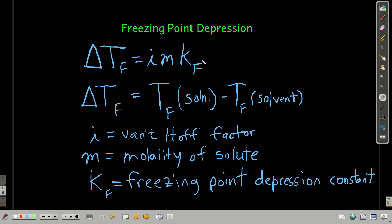Freezing point depression works like boiling point elevation except that the freezing point of a solution is always lower than that of the pure solvent when you add a non-volatile solute. Here, delta Tf equals the freezing point of the solution minus the freezing point of the pure solvent — this will be a negative number. When using it in the equation, just make it positive; it works out better. It uses the same Van't Hoff factor, same molality, and a freezing point depression constant that depends only on what the solvent is.